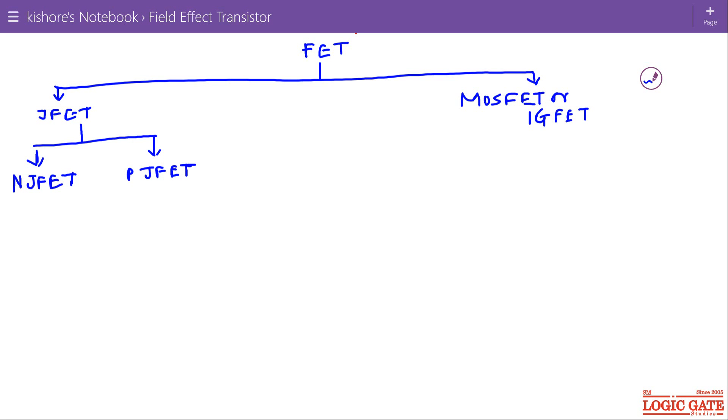And in MOSFET, again we have two types of MOSFET. First is depletion mode MOSFET and second is enhancement mode. And in depletion mode, again we have N channel and P channel MOSFETs. So N channel MOSFET denoted by N MOSFET and P channel MOSFET denoted by P MOSFET.